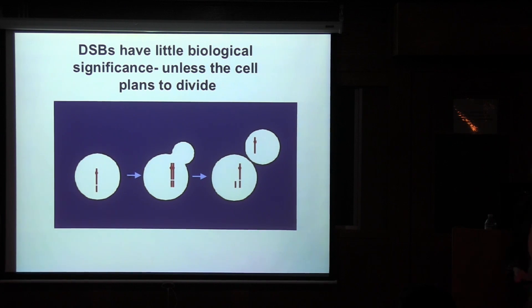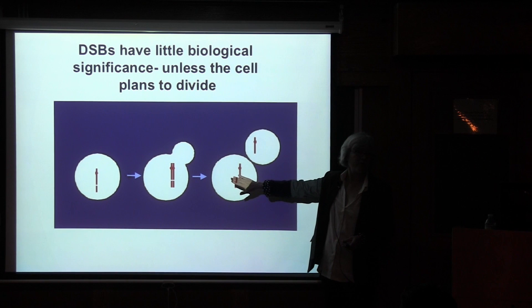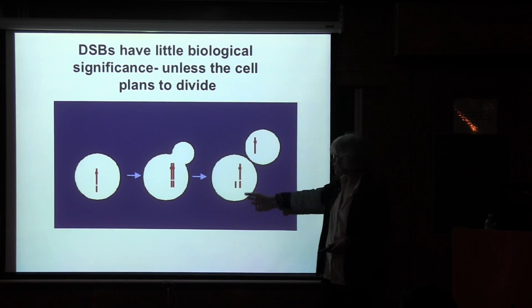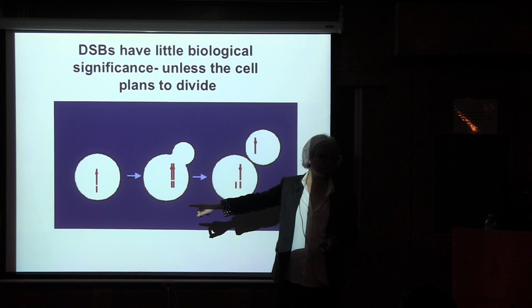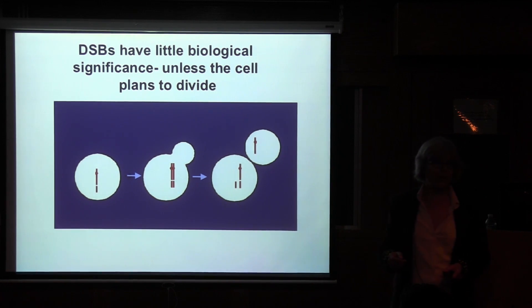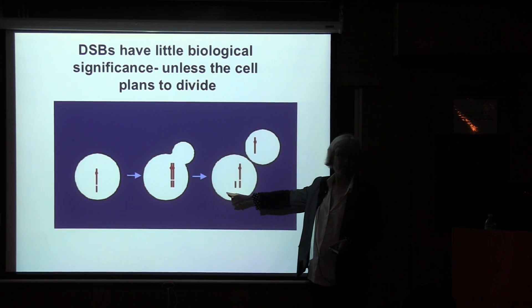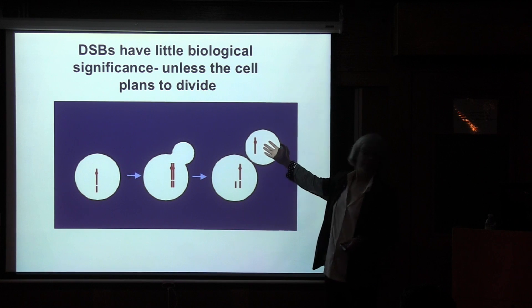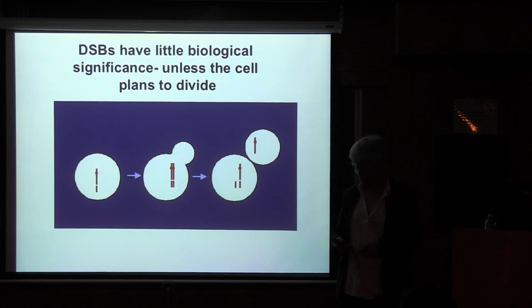Double-strand breaks sound horrific, but they actually have very little biological significance provided the cell doesn't divide. The only point of having genes connected to a chromosome is if you're going to do cell division. The whole point of being on a chromosome is to be attached to a centromere. If the cell doesn't need to divide, the DNA can still replicate and still do transcription — there's no problem. It's only in the context of cell division that you'd end up losing a chromosome arm. Here in yeast, you'd end up with a dead daughter cell. But as long as cell division doesn't happen, double-strand breaks are not a problem.